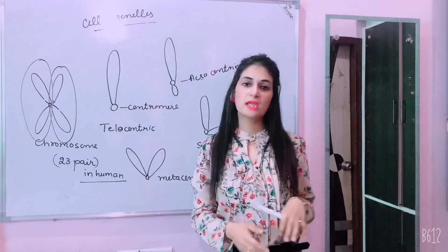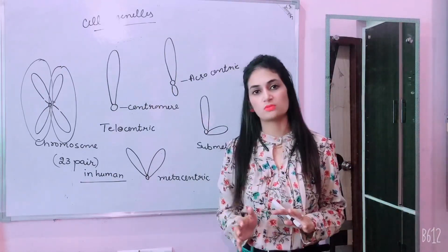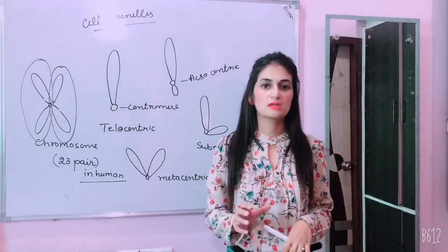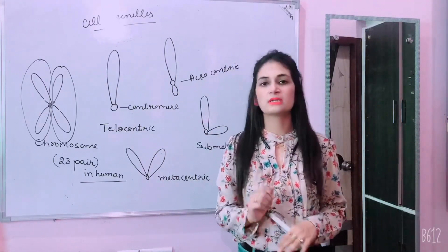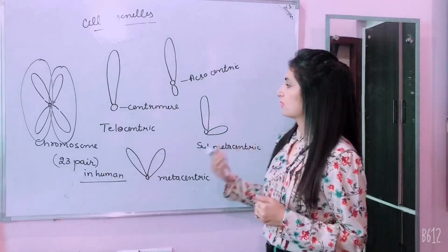So the chromosome is 23 pairs of chromosomes. Human is present. 23 pairs of chromosomes. That means total chromosome is 46. 46 chromosomes are present in human.